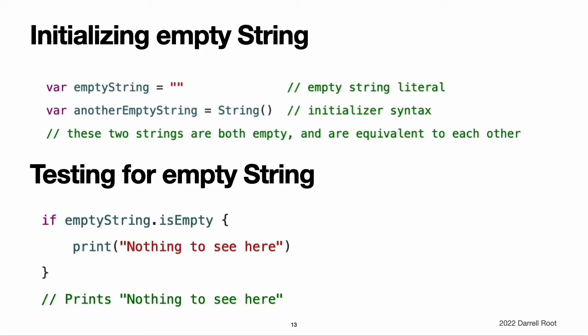Initializing an empty string. To create an empty string value as the starting point for building a longer string, either assign an empty string literal to a variable or initialize a new String instance with initializer syntax. Find out whether a string value is empty by checking its Boolean isEmpty property.